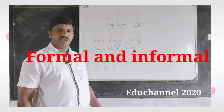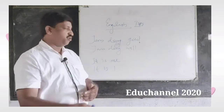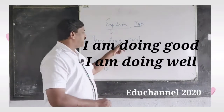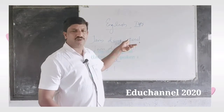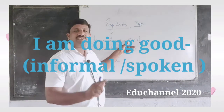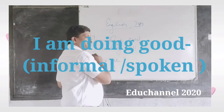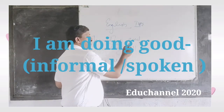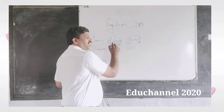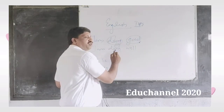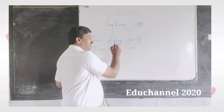No doubt, 'I am doing good' is used in spoken language, but it is not correct in formal language. 'Doing' is a participle verb, and 'good' is an adjective. An adjective should not be used after a verb, so 'I am doing good' is only acceptable in spoken, informal language.